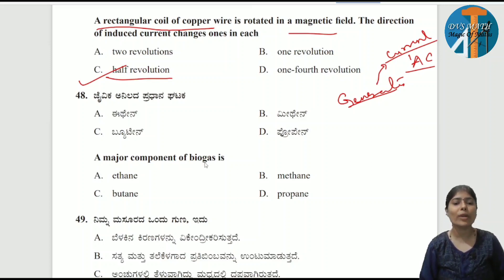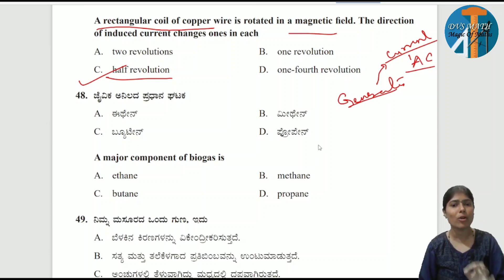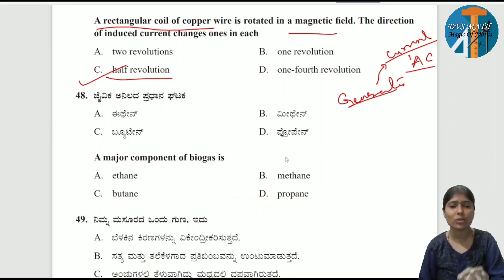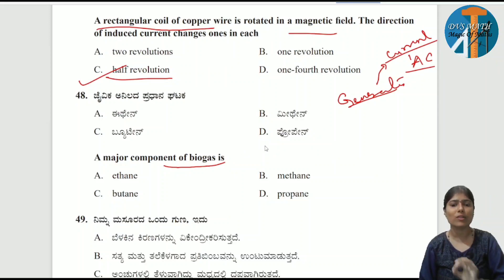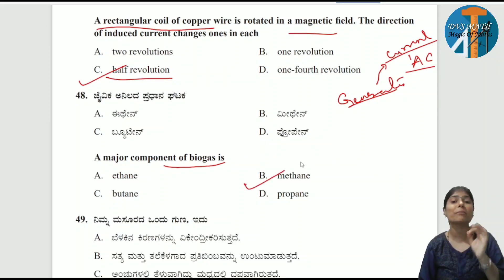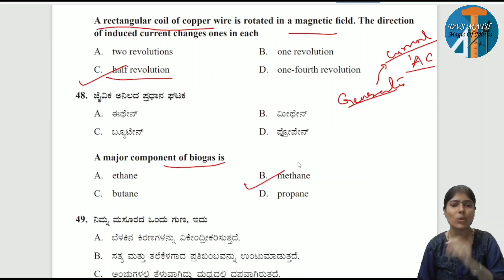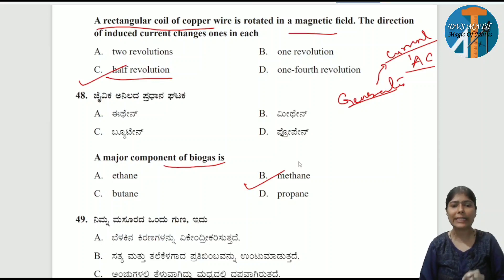The major component of biogas — this is very important in the sources of energy chapter. The main important component of biogas is methane. Methane is the very important component in biogas.